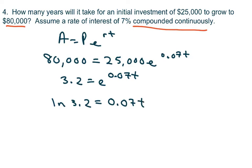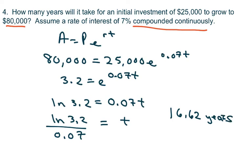And then divide by the rate, interest rate. And this gives you 16.62 years, approximately. Or that would be like 16 years and 8 months.